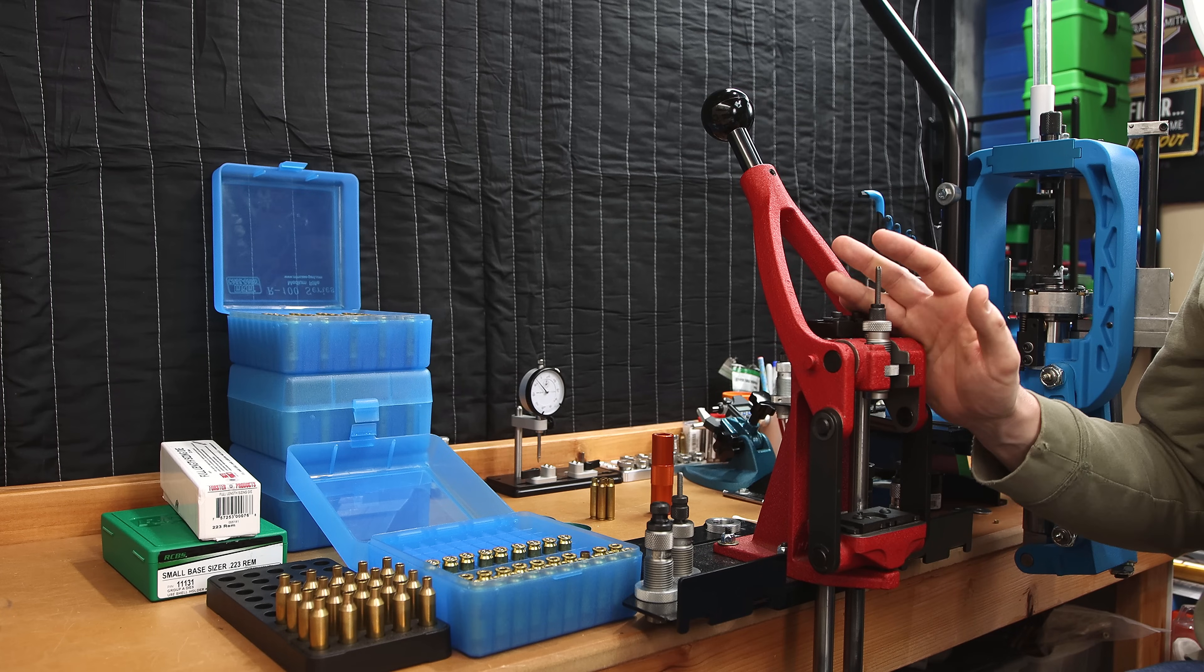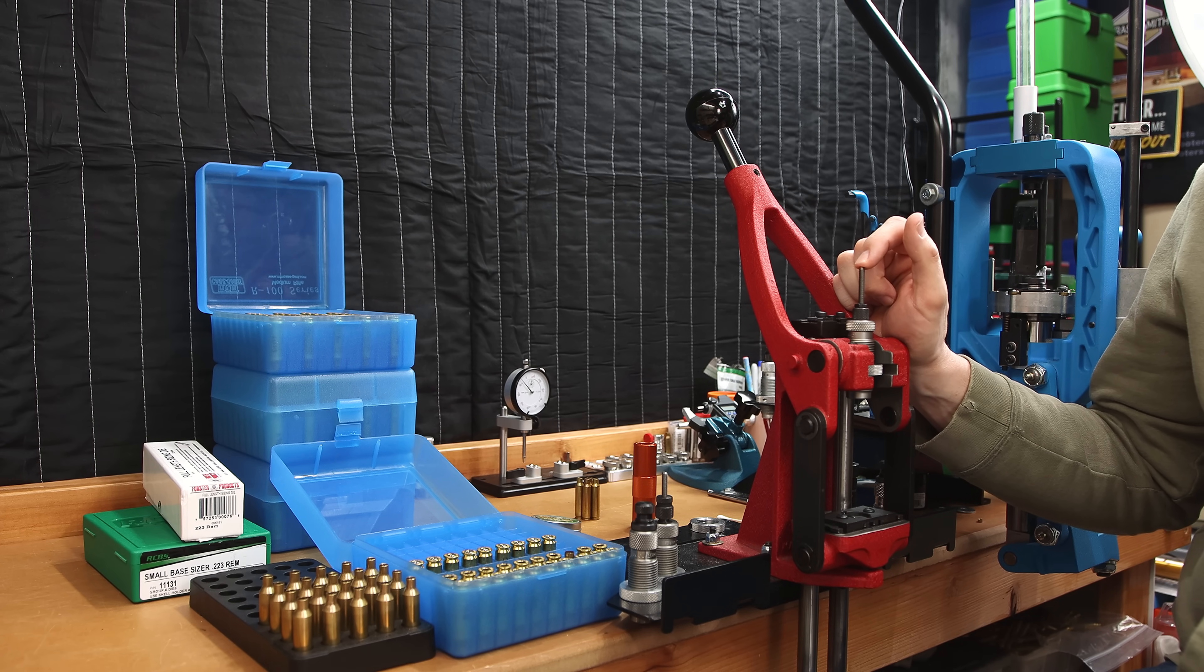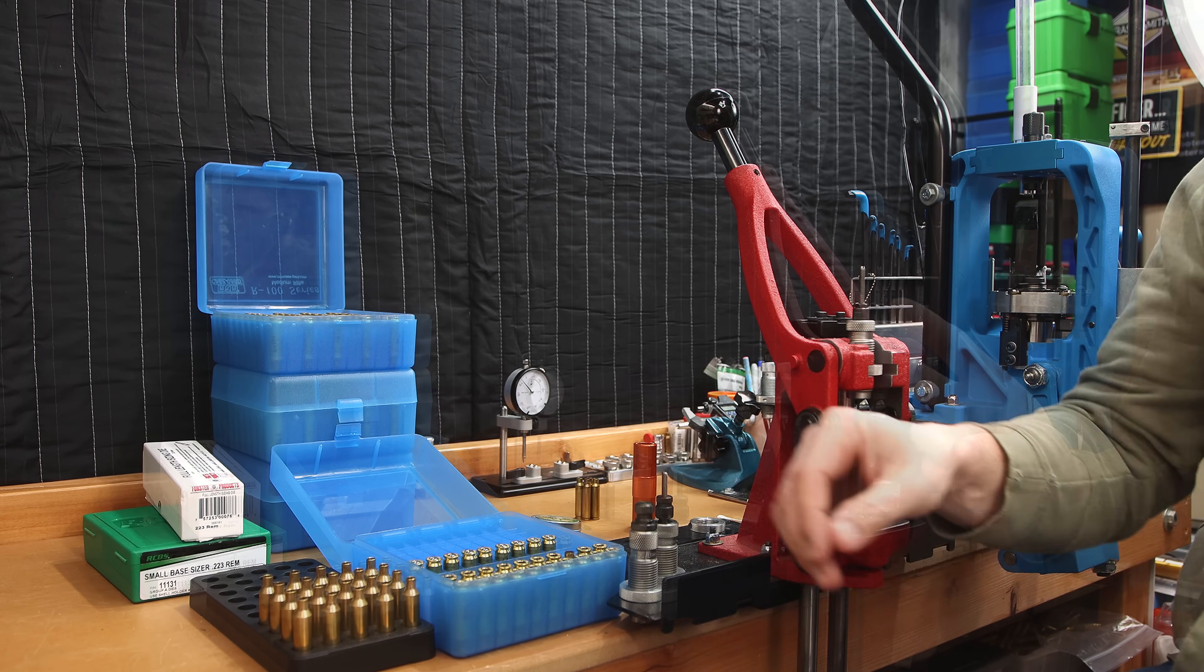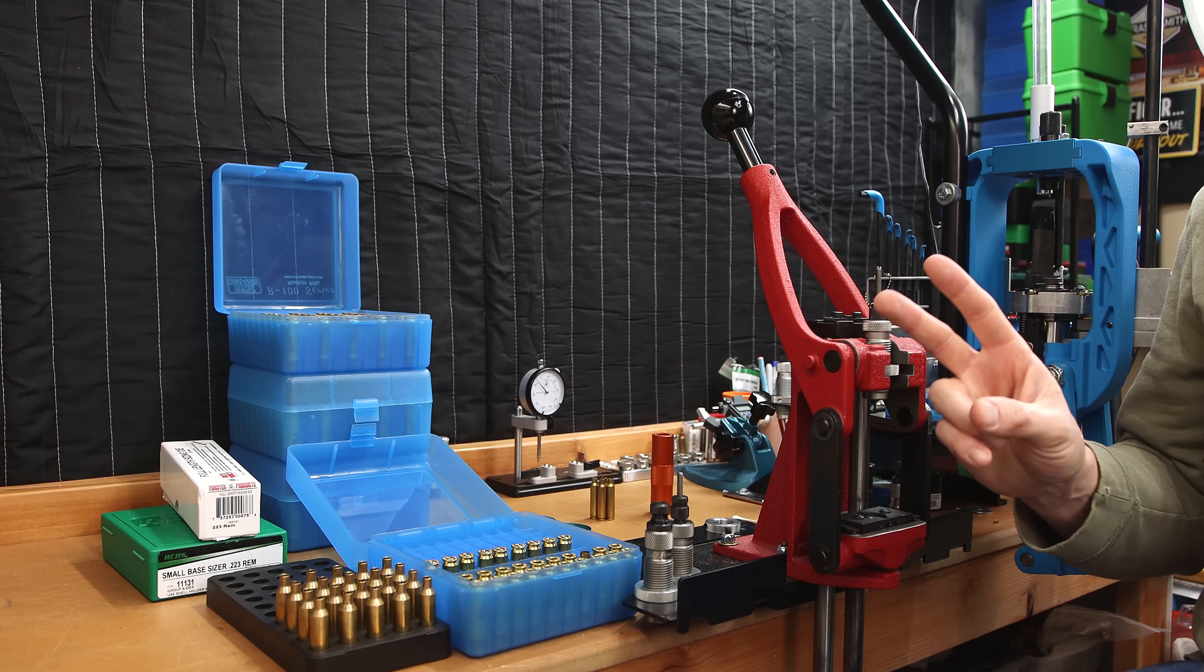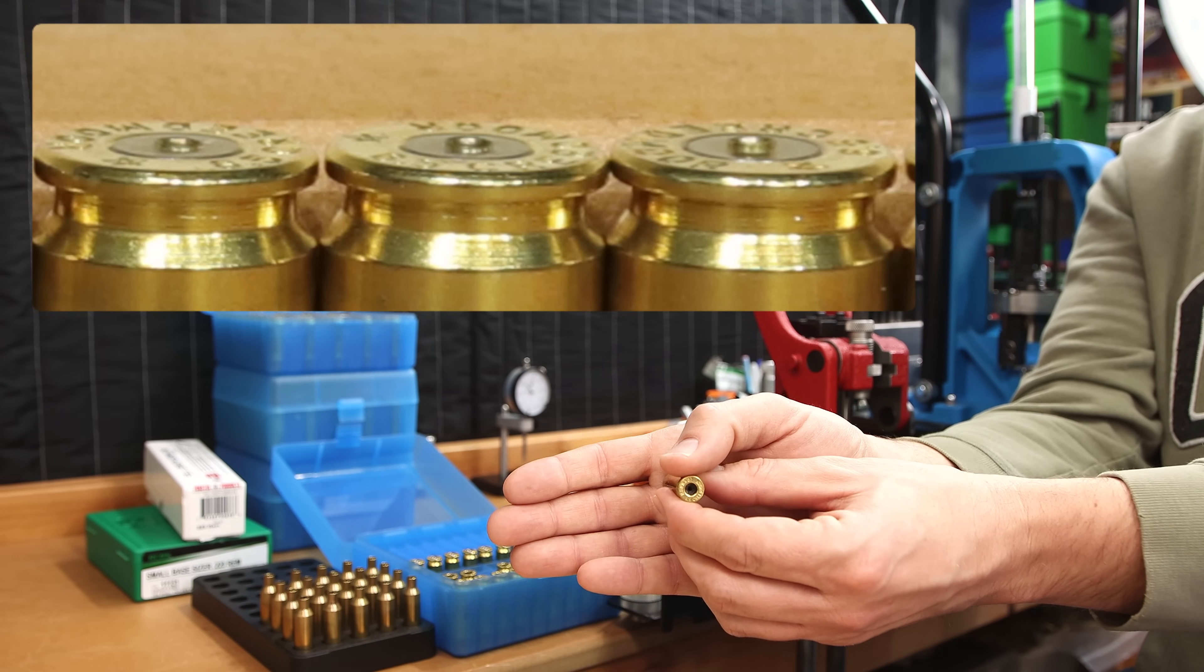If you want to set up your die for the best case life and accuracy, the first thing we're going to need is fired brass from the chamber that we're loading for. The second most important thing is that the brass has been decapped, meaning the primer needs to be removed from the case. All the brass measurements we're going to talk about today are on decapped brass, because if we left the primers in, they can skew our readings.